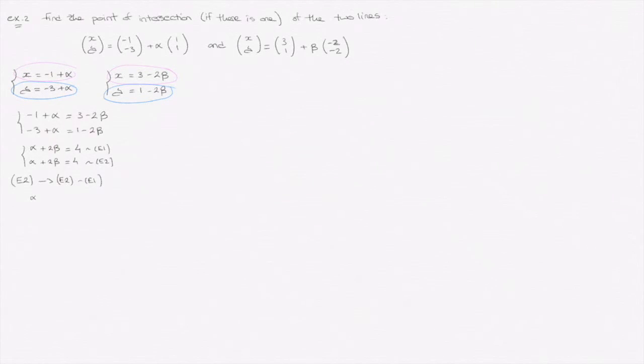So writing this here, the first equation is unchanged: α + 2β = 4. And the second equation, well, I subtract the first equation from it. So α - α is 0, 2β - 2β is 0, and of course, on the right-hand side, 4 - 4 is 0.